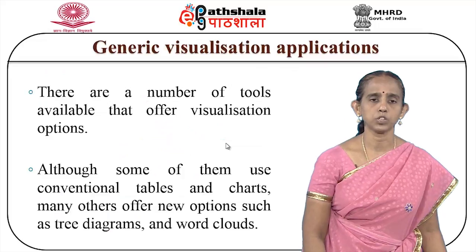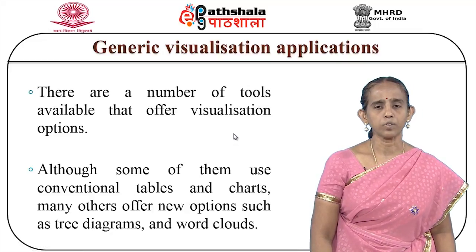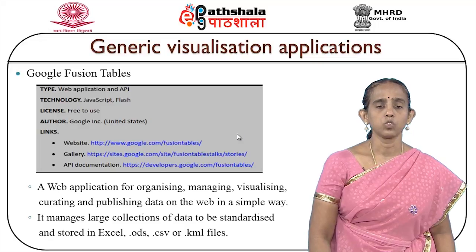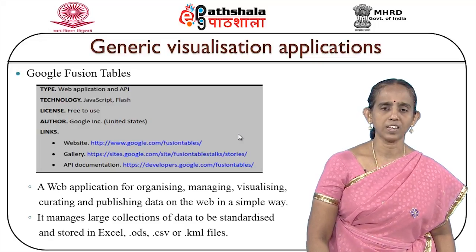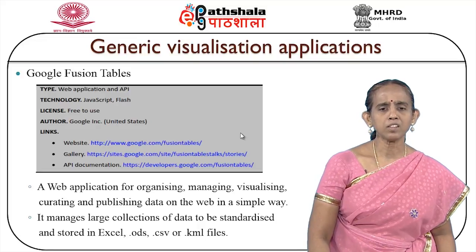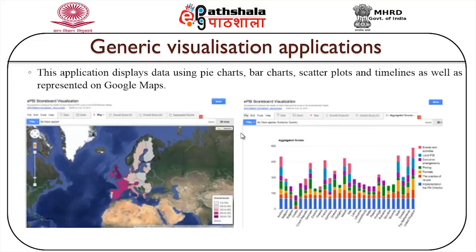There are various generic visualization applications offering visualization options. Although some use conventional tables and charts, many others offer new options such as tree diagrams and word clouds. Google Fusion Tables is a web application for organizing, managing, visualizing, curating, and publishing data on the web. It manages large collections of data standardized and stored in Excel, ODS, CSV, and KML files. This application displays data using pie charts, bar charts, scatter plots, and timelines, as well as Google Maps.